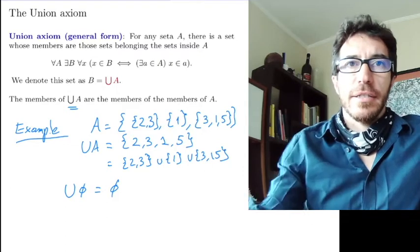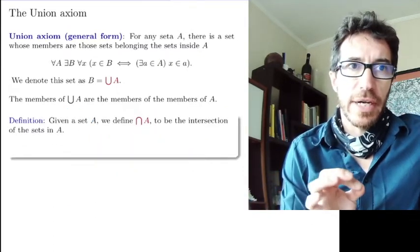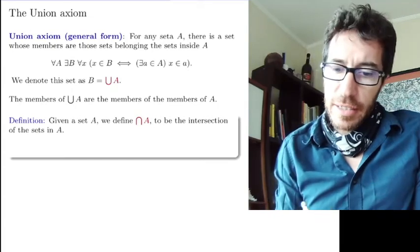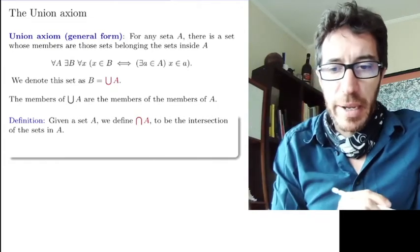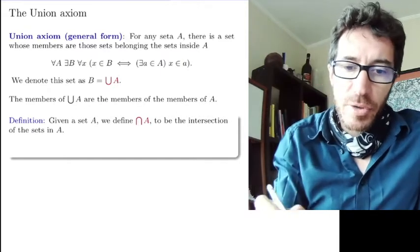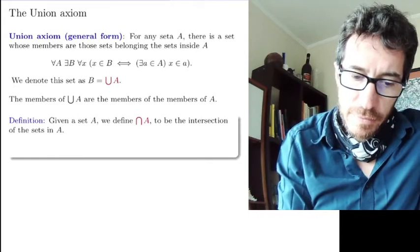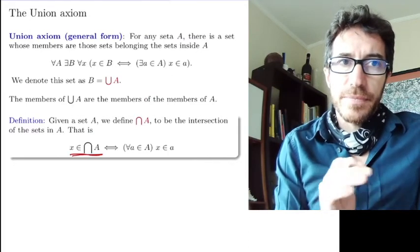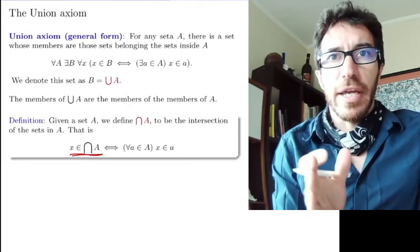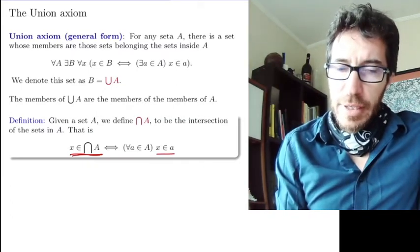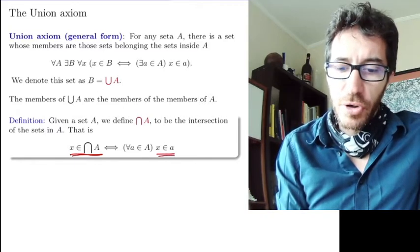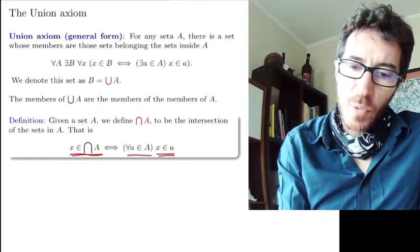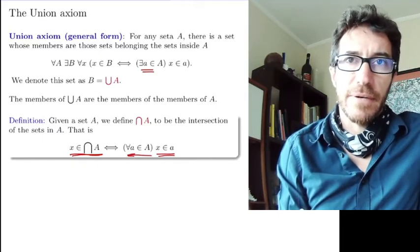So the next step will be to define the intersection. Given a set A, we're going to define the general intersection. It's a big upside down U for intersection, to be the intersection of all the sets in A. The members of this intersection are going to be exactly the x's that belong to all members of A at the same time, the ones that belong to set a for all a's in A. The union is the ones that belong to some set in A, and the intersection is the ones that belong to every set in A.